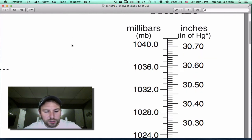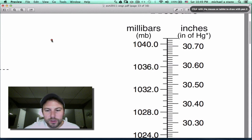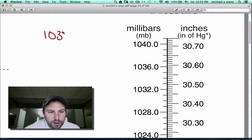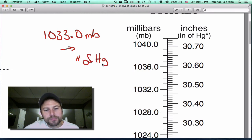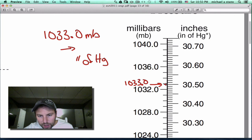So let's take a look. Let's use the number, let's do 1033.0 millibars. And we want to convert that to our inches of mercury. So we go to 1033, so 1028, 1032, 1033 would be right there, 1033.0 millibars. And what we do is we take this line and we carry it over.